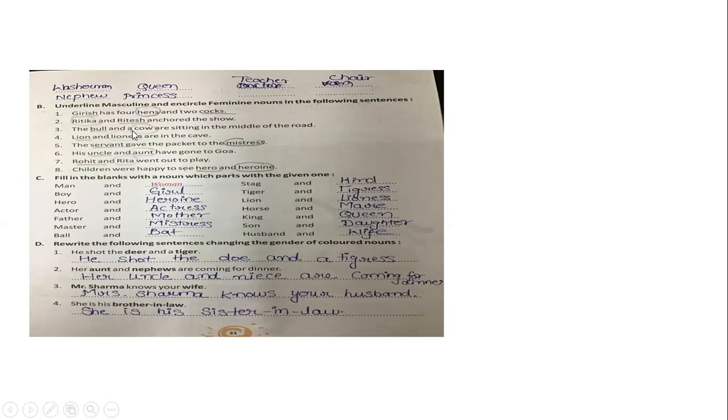The bull and a cow are sitting in the middle of the road. The bull is masculine and cow is feminine. Next, lion and lioness are in the cave. Lion is masculine and lioness is feminine.